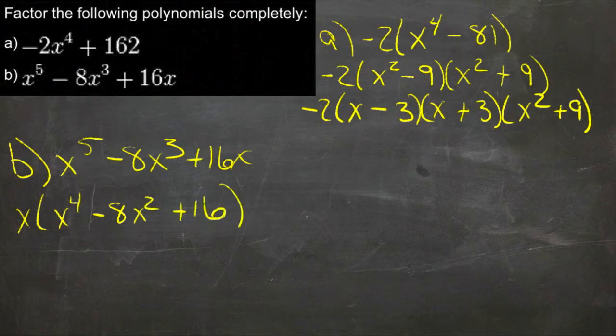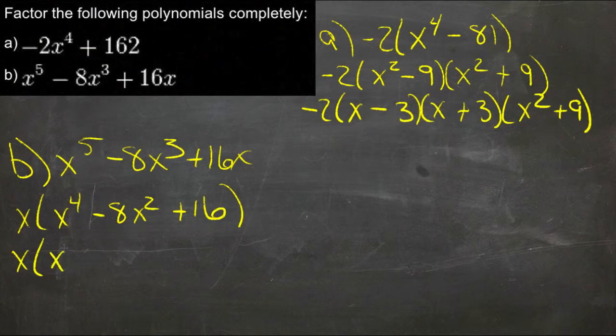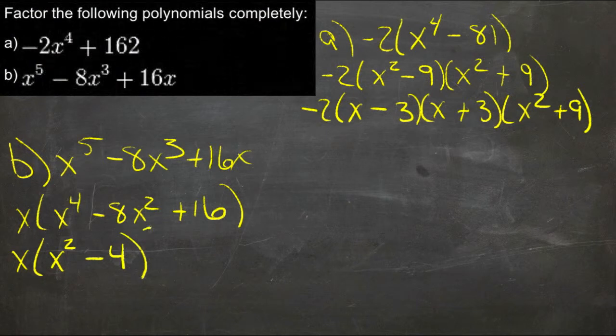And that looks like a perfect square trinomial again. So we'd have x times x squared minus 4 quantity squared.